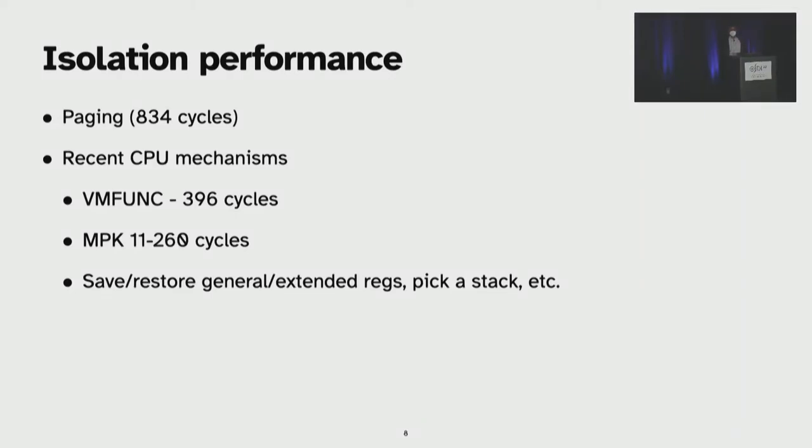How much is the performance overhead for this isolation mechanism? Historically, isolation was expensive. We have been using paging mechanism for quite a while, which is around 800 cycles. If you put that into perspective for transmitting a network packet, which takes around 2,000 cycles, this is a prohibitive overhead. However, the recent CPU extensions are promising. For example, we have VM func and MPK, which are in the order of 400 cycles for VM func and 200 cycles for MPK.